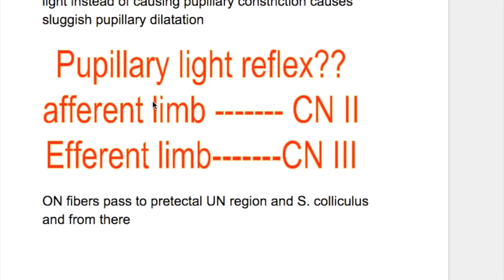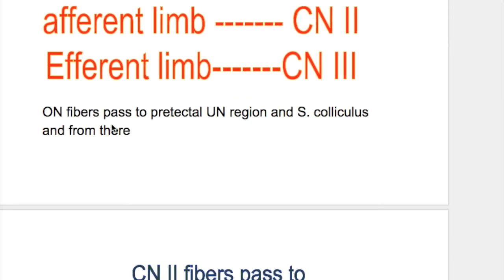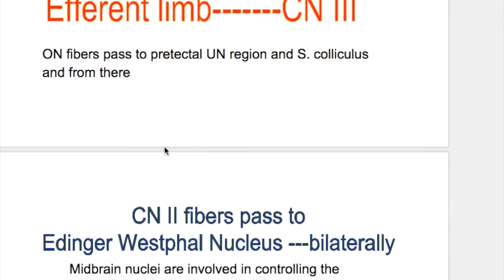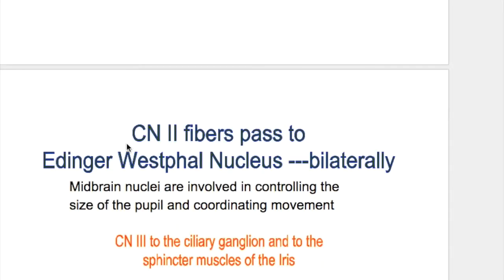How does the pupillary light reflex work? The pupillary light reflex has two arms. The afferent limb is carried by the optic nerve, and the efferent limb, which brings back impulses to cause pupillary muscle constriction, is carried by the oculomotor nerve. The optic nerve fibers pass to the pretectal nucleus and the superior colliculus, and from there pass to the Edinger-Westphal nucleus of the oculomotor nerve bilaterally.